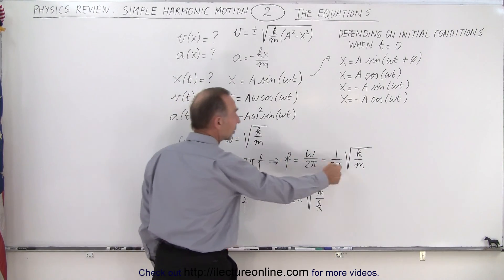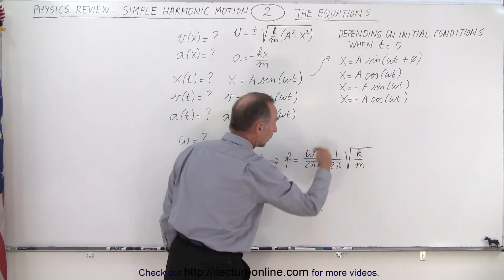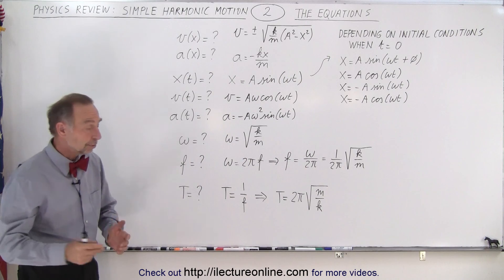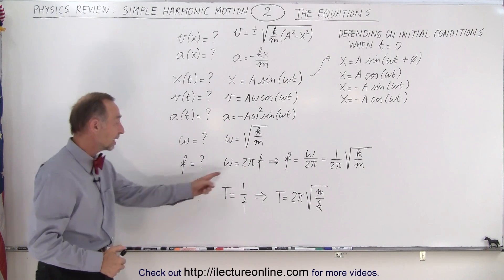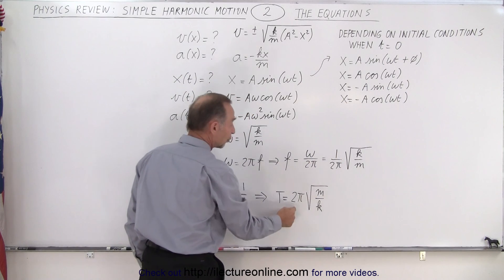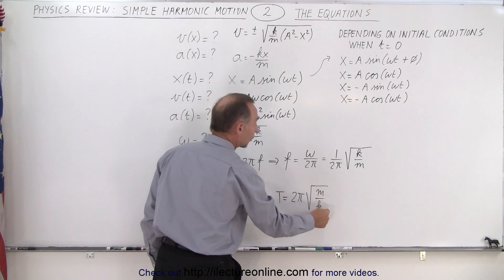And since we know that omega is equal to the square root of k over m, we can write the frequency as that. And then the period of the single oscillation is simply the inverse of the frequency, and therefore we take the inverse of this equation, we get 2π times the square root of m over k.